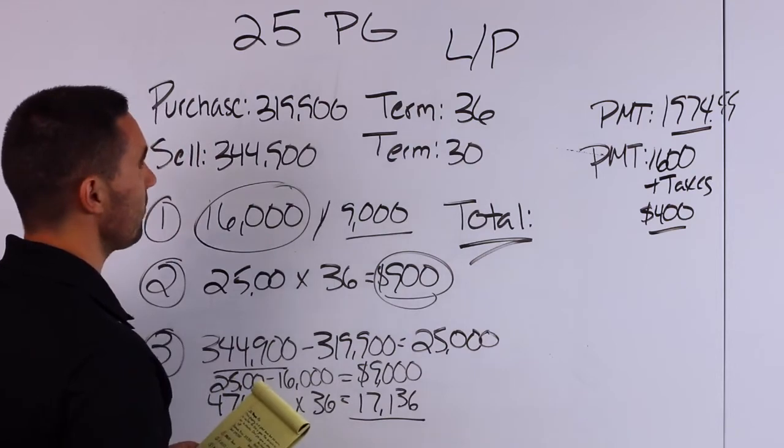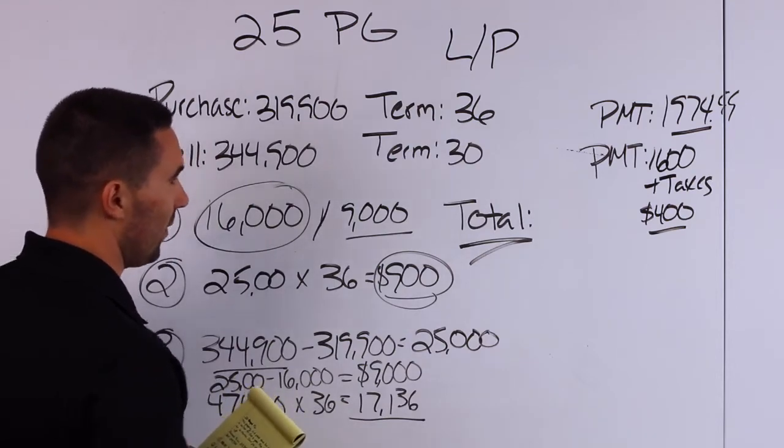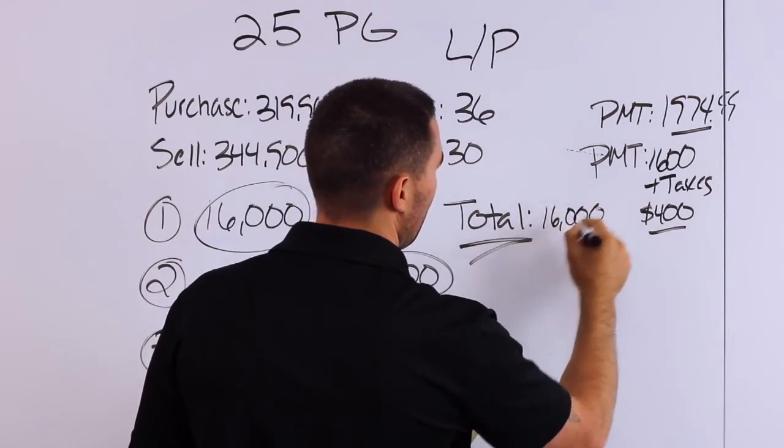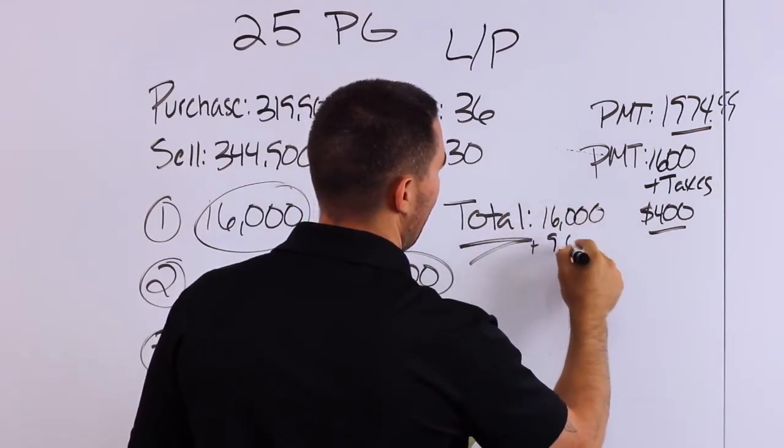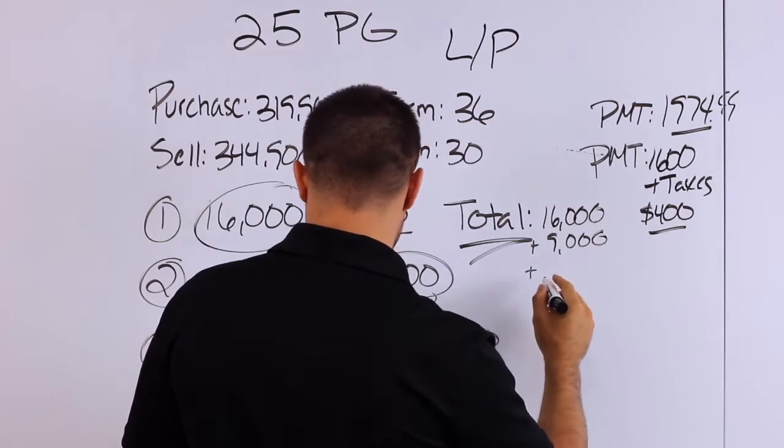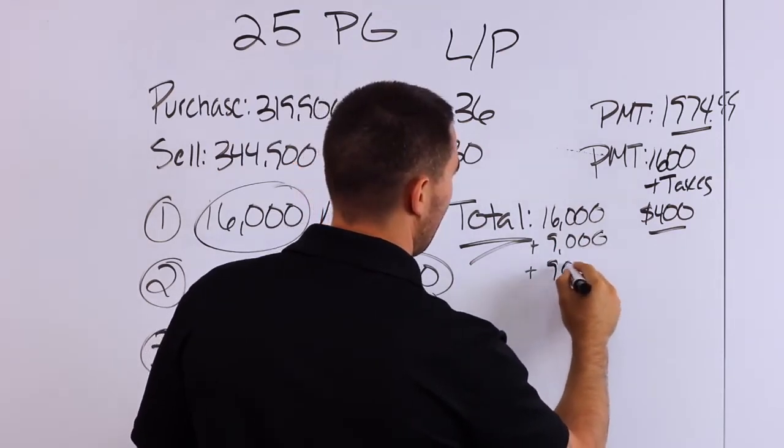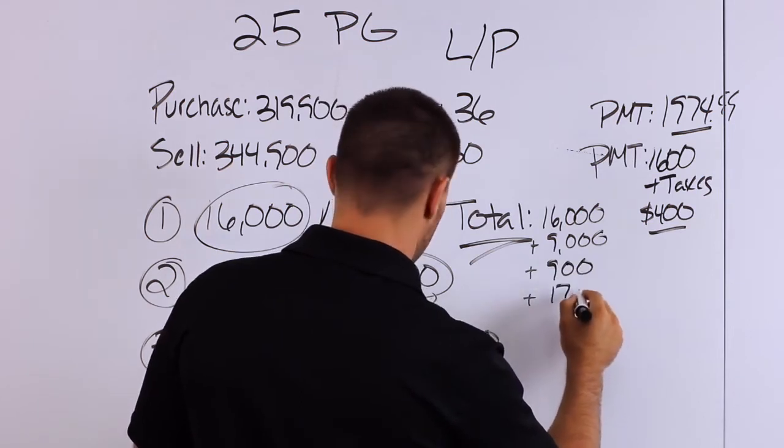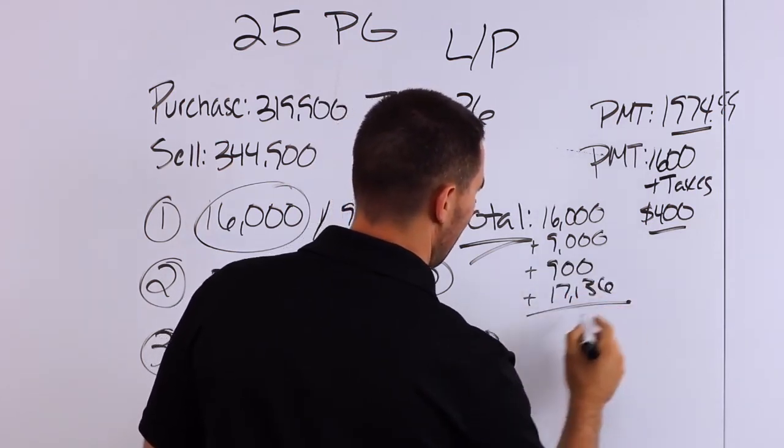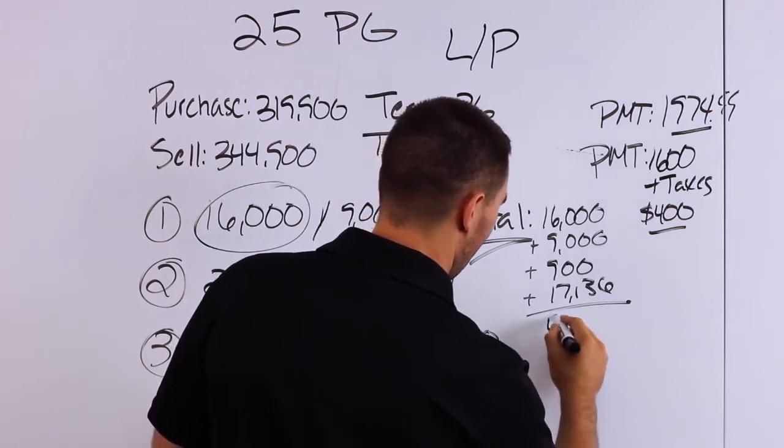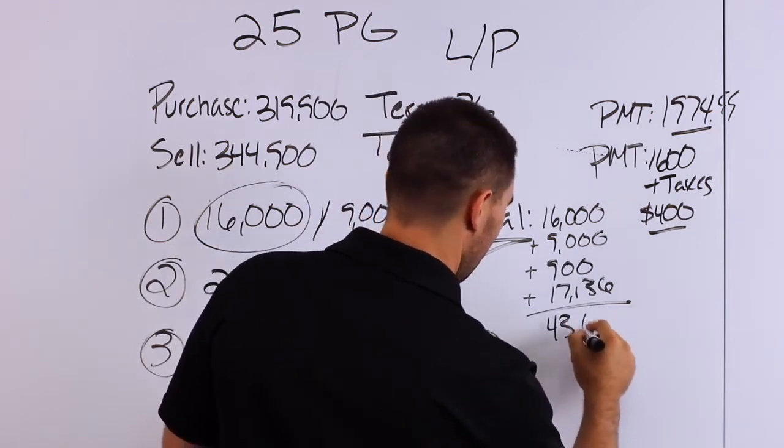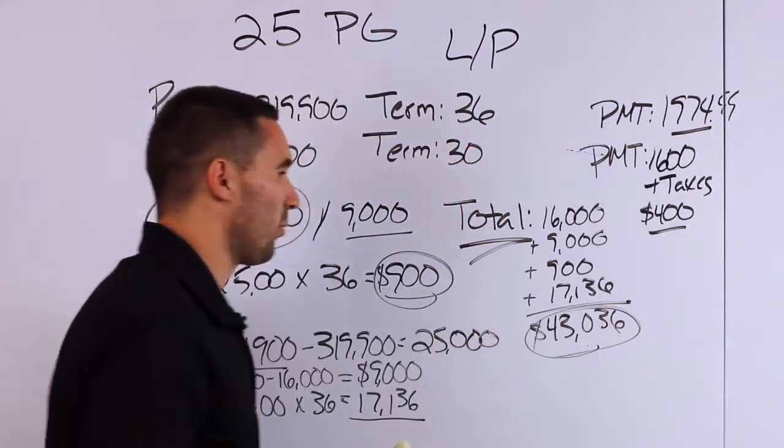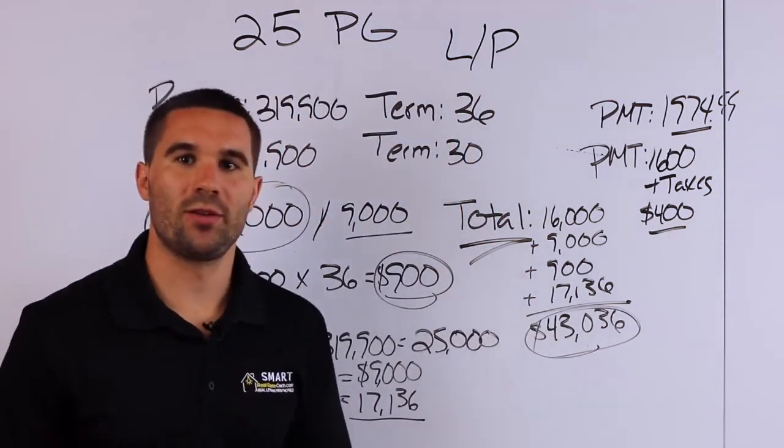So let's total this up. So you have $16,000 plus the remaining $9,000 plus the $900 in spread plus the $17,136 in principal gives you a total of $43,036. So total three paydays, $43,036.